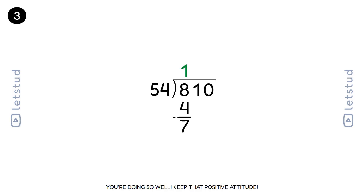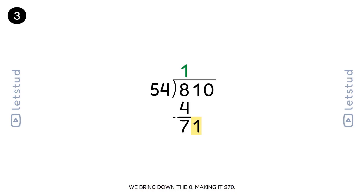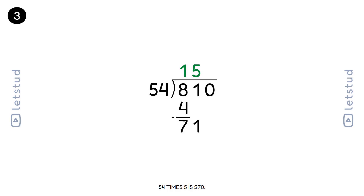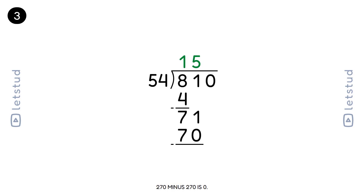You're doing so well, keep that positive attitude. Now let's bring down the next digit, 0, making it 270. 54 fits into 270 five times. 54 times 5 is 270. 270 minus 270 is 0.